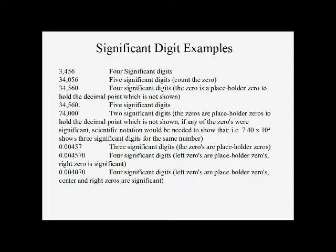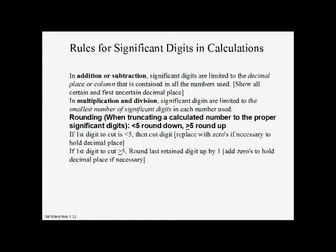0.004070 shows us a variety of zeros — three types. The ones on the left show us the decimal point and are not counted. The one between the four and seven is going to be counted. The one on the right is counted because there is a decimal point in that number. So we end up with four significant digits.